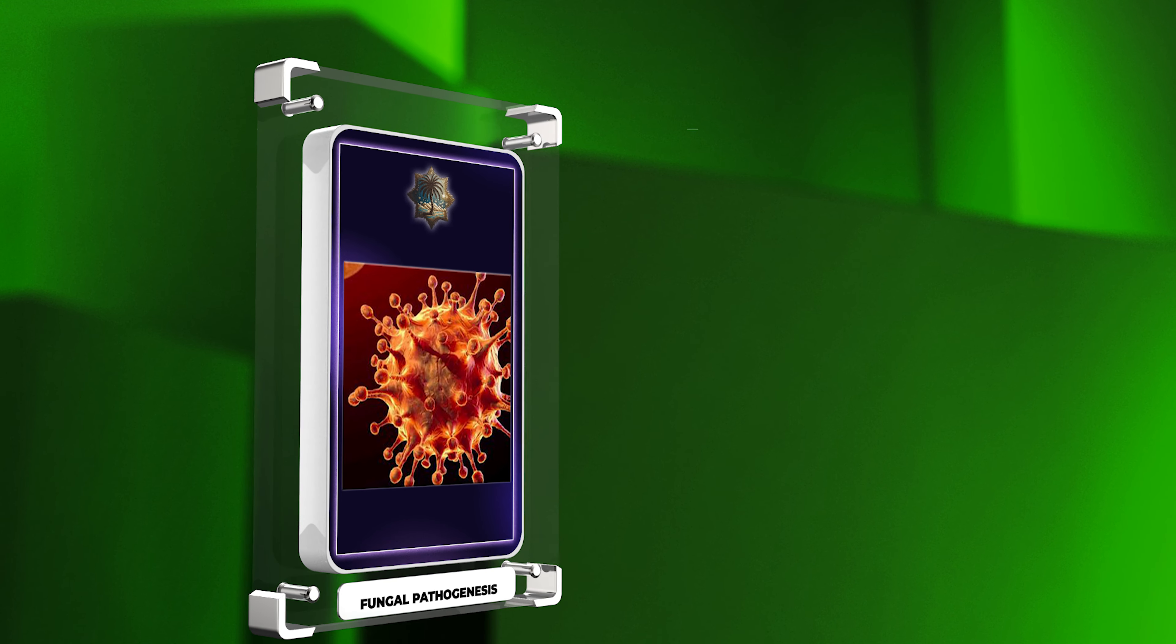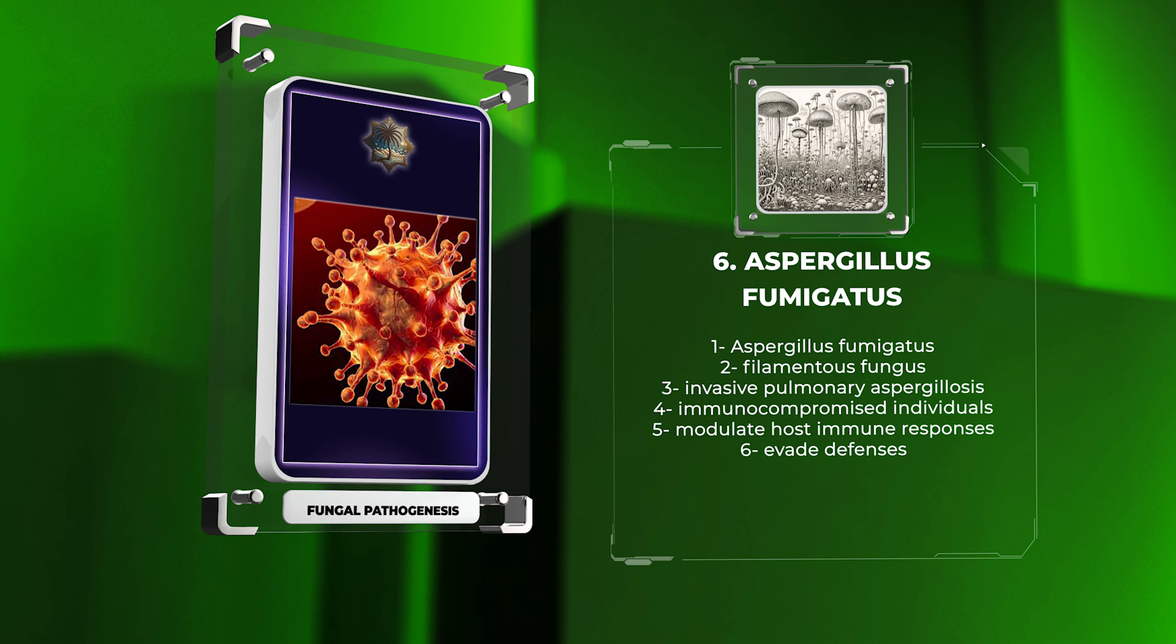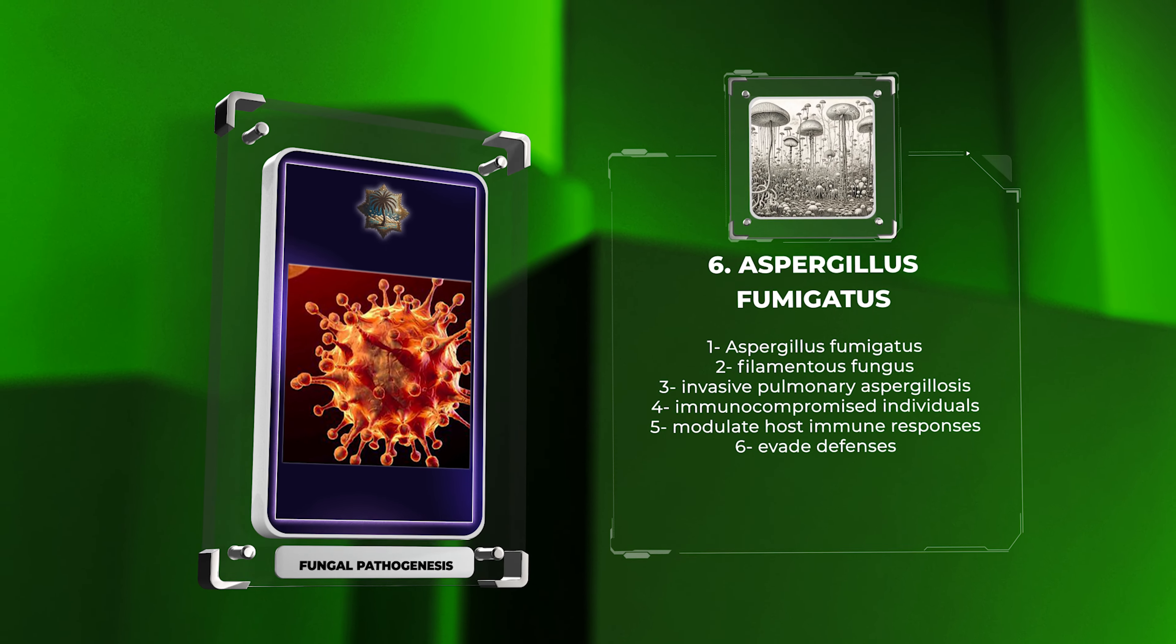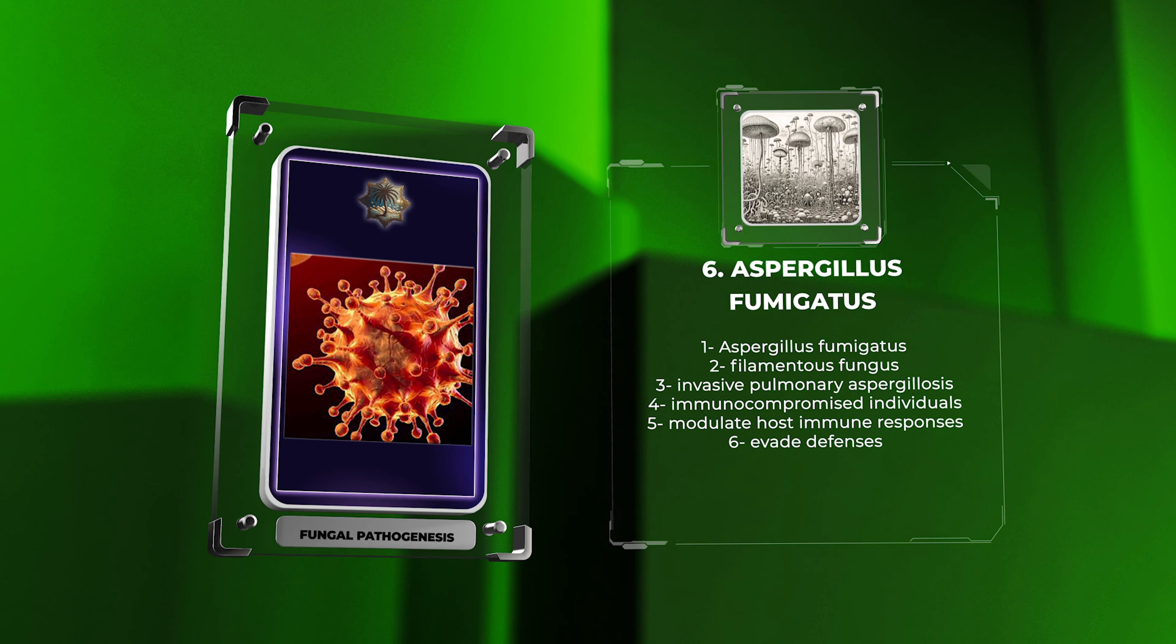Aspergillus fumigatus, a common filamentous fungus, can cause invasive pulmonary aspergillosis, particularly in immunocompromised individuals. This is facilitated by the fungus' ability to modulate host immune responses and evade defenses.